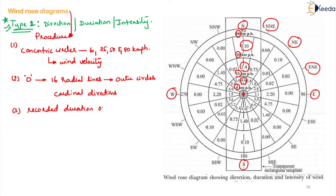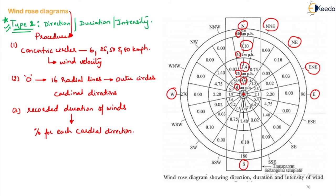The recorded duration of winds is expressed as percentage for each cardinal direction. It may be noted that the cardinal direction is central to its sector. For NNE direction, the values are 3.4%, 0.75%, and 0 — like that, we go on writing for all directions. This indicates the duration of wind velocities for each sector.